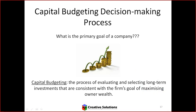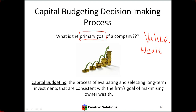What's the primary goal? Value or wealth — for who? For the shareholders. Correct. Shareholders are interested in profit, but shareholders want value. They want increased wealth. So you might have a company that is unprofitable in the short term, but they're still creating value.